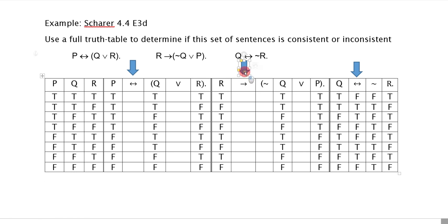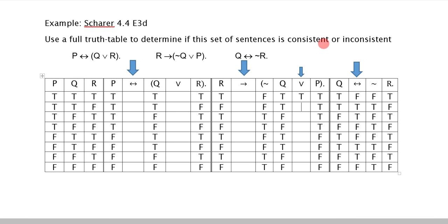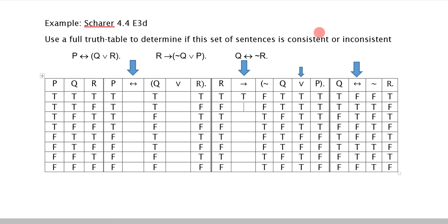For the second sentence, I want the conditional, but the consequent is complicated. The main connective of the consequent is the OR because the negation only modifies Q. So I do the negation of Q first, then the OR looking at the negation column and the P column — OR is true whenever either side is true or both. Now I can do the conditional, looking at antecedent R and the consequent's OR column. The conditional is only false in the case where we have a true antecedent and a false consequent.